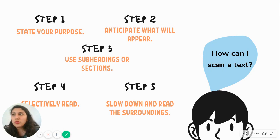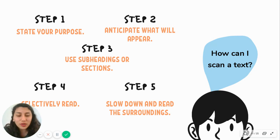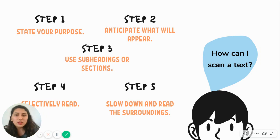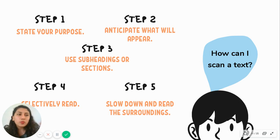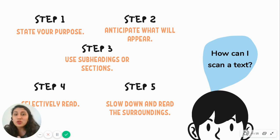For example, if I'm looking for 'cute dogs' and part of the text says 'cute dogs' — after skipping sections I don't need, I stop there, slow down a little bit, and read the surroundings. I can read the previous sentence and the next sentence from that keyword to check whether that information is useful to answer what I need or to obtain the information I'm looking for.